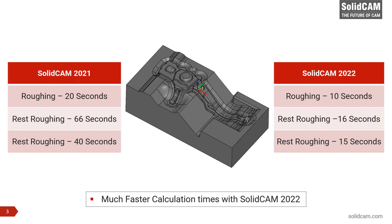We are seeing about three to four times faster calculation using SolidCAM 2022. Wherever the Turbo HSR engine is used, the change is reflected also in those strategies. For example, in rotary machining, the same Turbo HSR strategy is used for roughing, so the calculation speed there has also gone up approximately four times — what took about two to two and a half minutes in 2021 now takes about 30 to 40 seconds in 2022. This was achieved through changes in the internal algorithm.